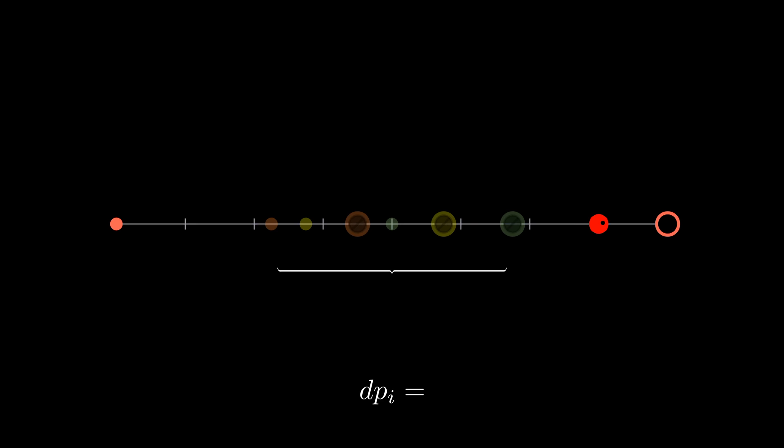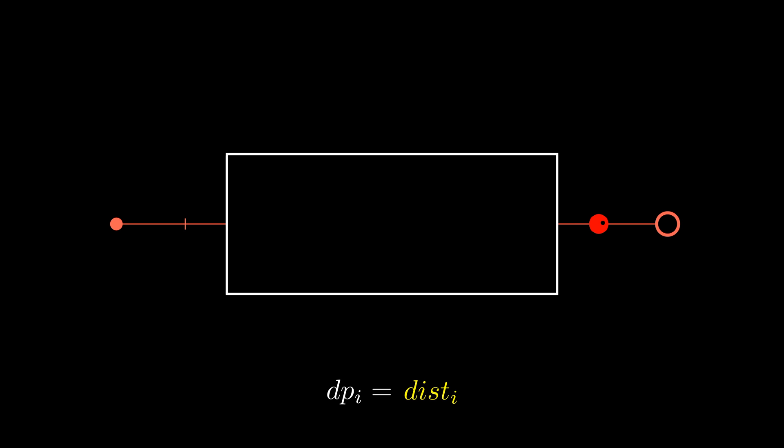So then the question is, how do we actually calculate the dp array? We know we'll at least have to travel the gap between our exit and our entrance, so let's set that aside. Let's see if we can compute the time of a return trip based on previously computed times.